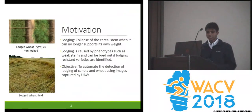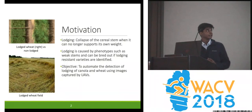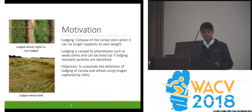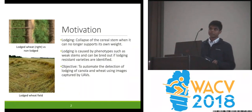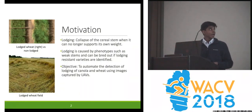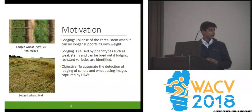Lodging is the collapse of the cereal stem when it can no longer support its own weight. In basic terms, this is when plants fall over. This can take up to 40% of your harvest away and could make the harvesting process very much harder, due to the harvesting machines not picking up all your crop.